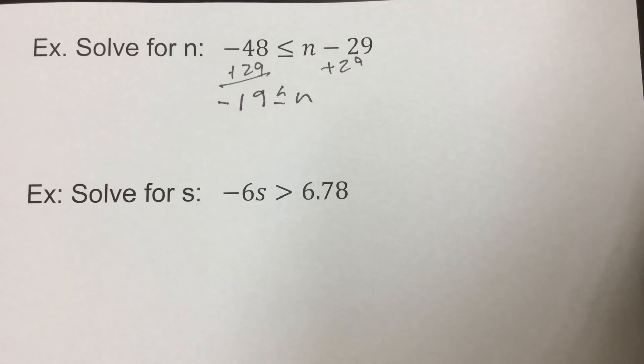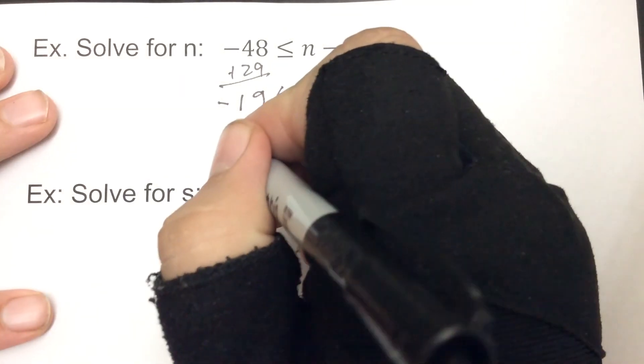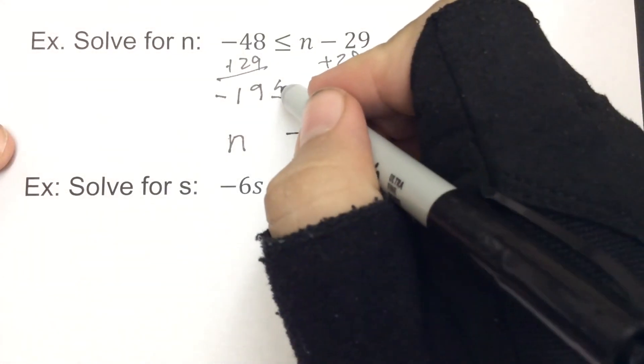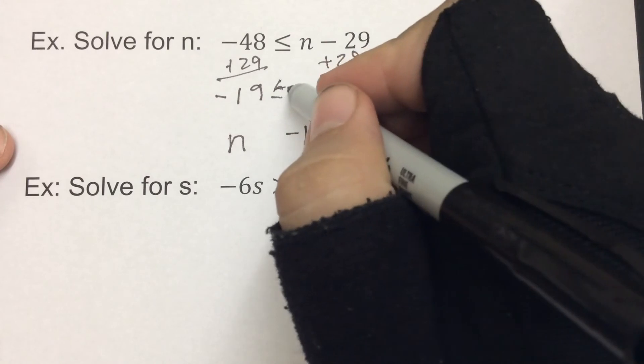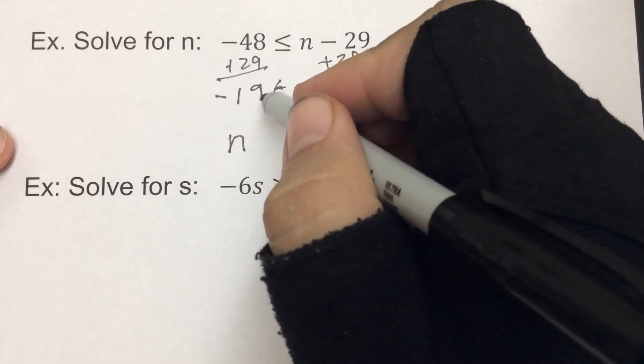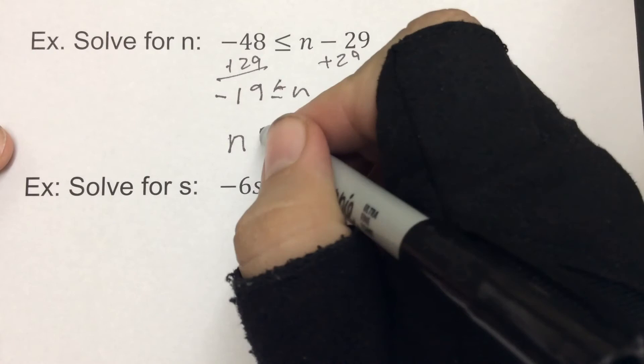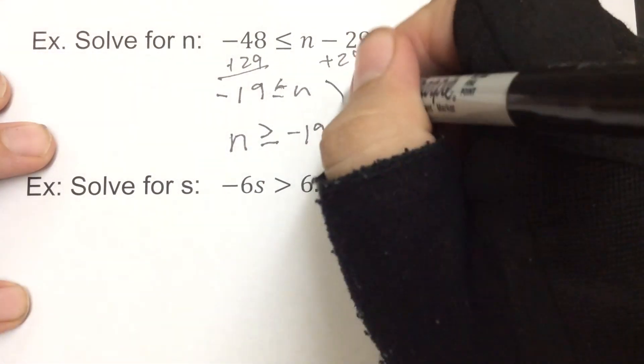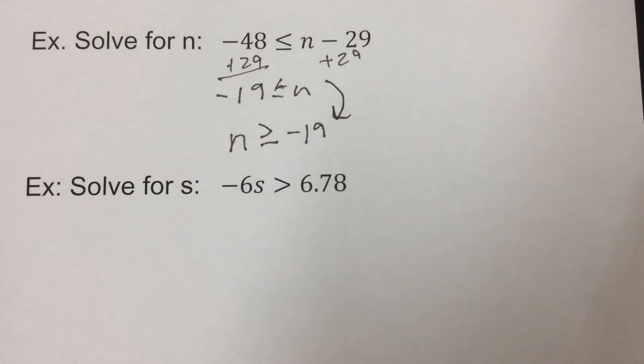Now this can be fine how it's written, but typically we write it where the letter is on the left side. So if we switch order, our n and our negative 19, so our letter's on the left, we have to switch this around too. Because the bigger side is the n and it's pointing to the negative 19, so it has to be the smaller side. So the sign will switch too if you switch the order. Okay, so when we go from having the letter on the right to having the letter on the left, we switch our order, which means we also switch the sign as well.